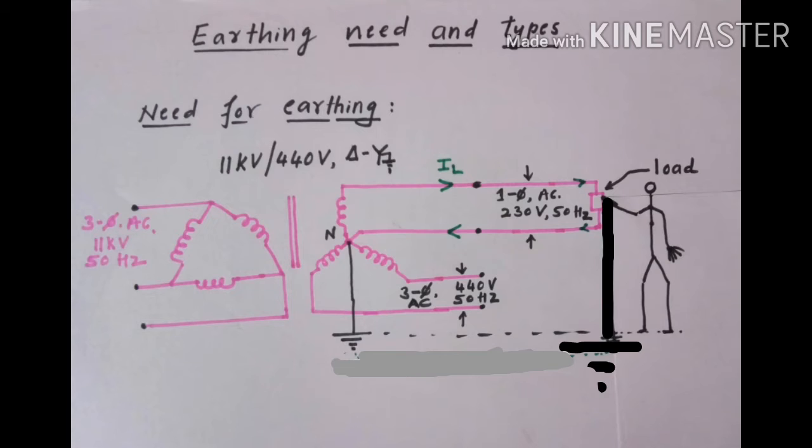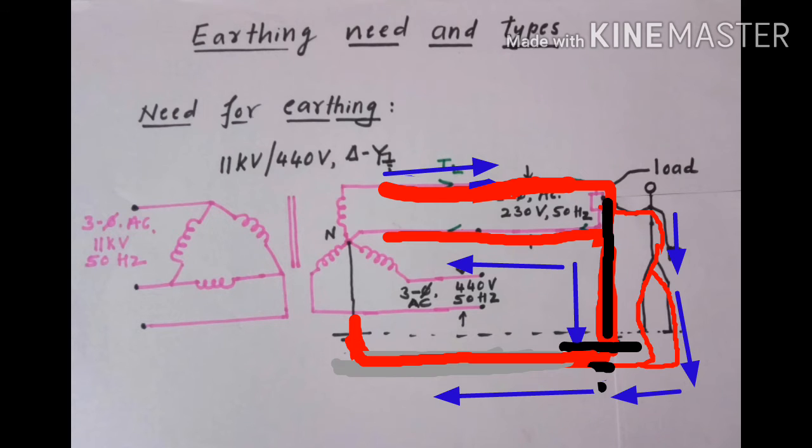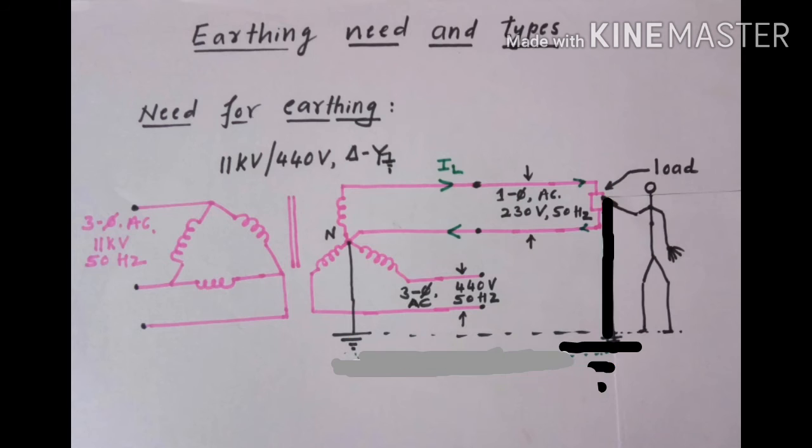Once the proper earthing is provided, even if insulation fails and an operating personnel comes in contact with the metallic casing of the load, the current through operating personnel's body reduces due to reduction in potential across his body. Thus, the operating personnel gets protection against electric shocks. That is why earthing is necessary.